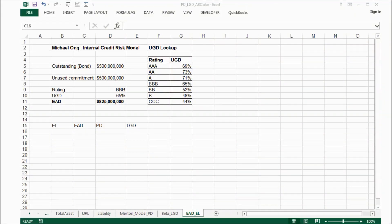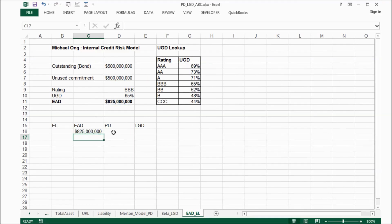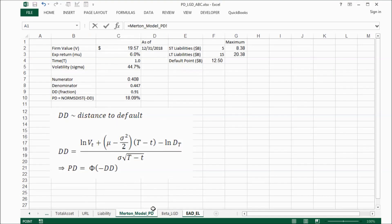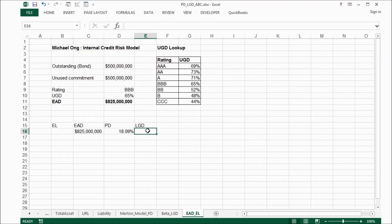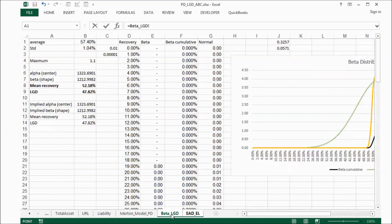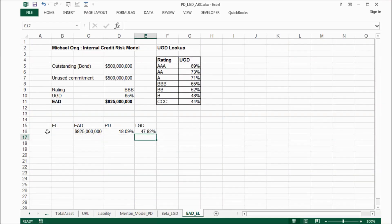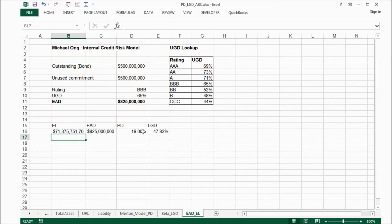Now we can calculate our expected loss. The EAD is equal to 825 million. And the PD is equal to 18.09%. And LGD is equal to 47.82%. And our expected loss equal to EAD times PD times LGD. Gave us about 71 million dollars.